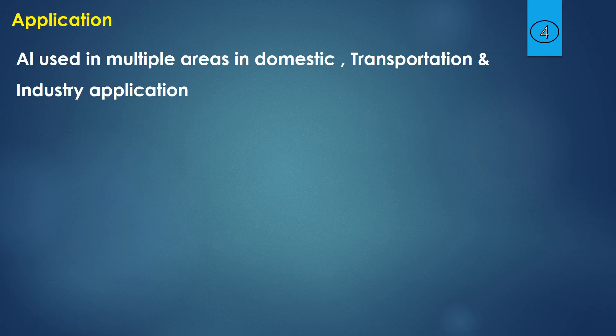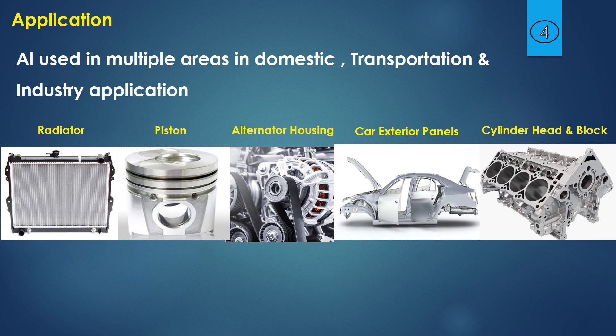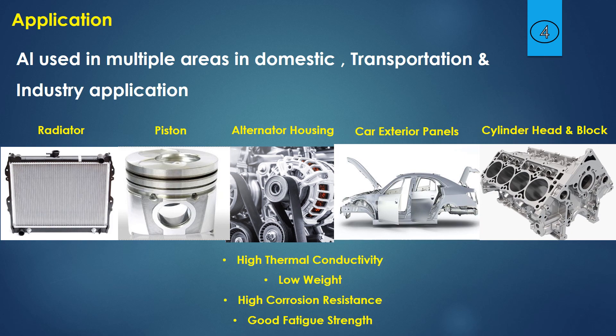Aluminium is used in multiple areas in domestic, transportation, and industry applications due to its great advantages. For the radiator, the reasons are high thermal conductivity and good corrosion resistance. For the piston, high thermal conductivity, good fatigue strength, and low weight are the reasons it is used.